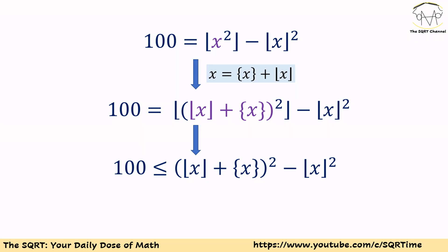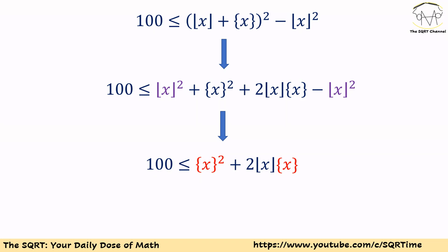Now we can write 100 as floor of (floor of x plus fractional part of x), to the power of 2, minus floor of x squared. We are going to remove the floor operator from the first term, so 100 is going to be less than or equal to (floor of x plus fractional part of x) squared minus floor of x squared.